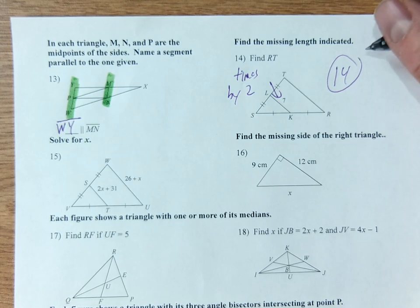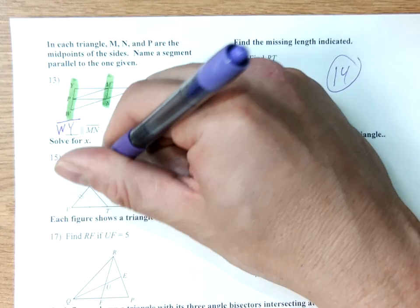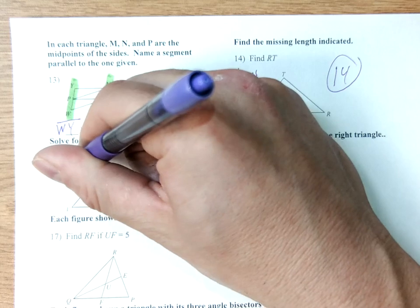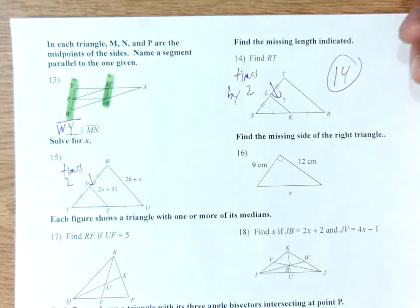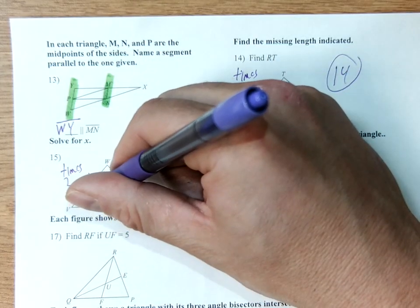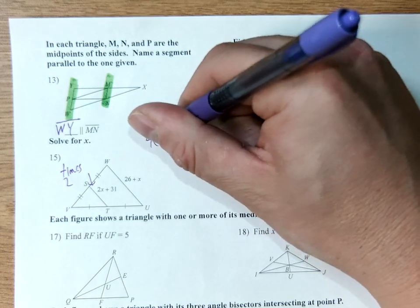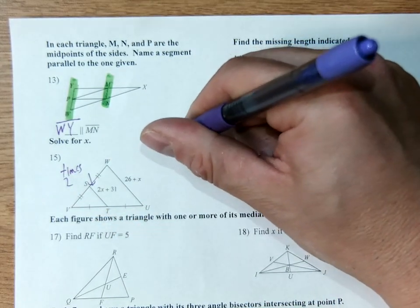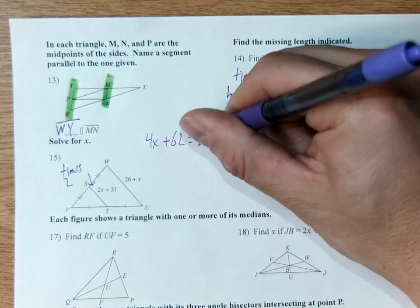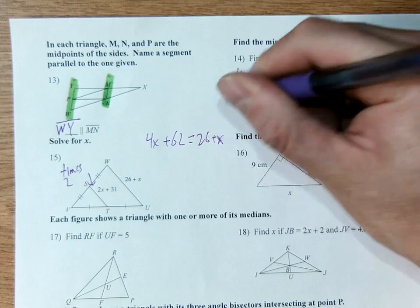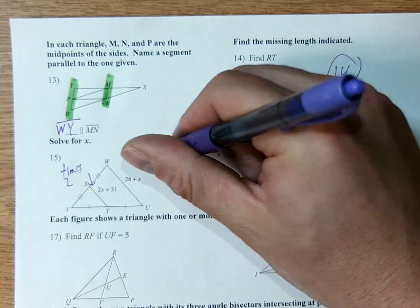Two times seven. We do the same thing on number 15. We times by two. The only issue here is now we have to solve for an x. So I double this. Instead of 2x it's 4x. Instead of 31 it's 62. That will equal to 26 plus x.